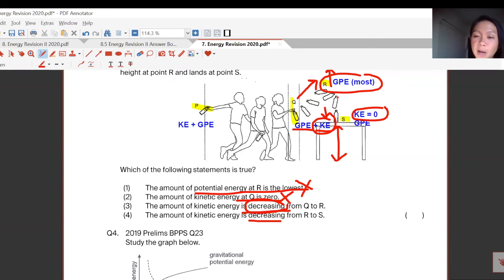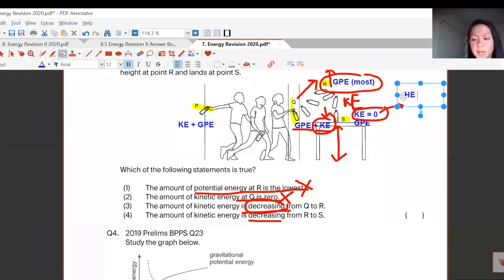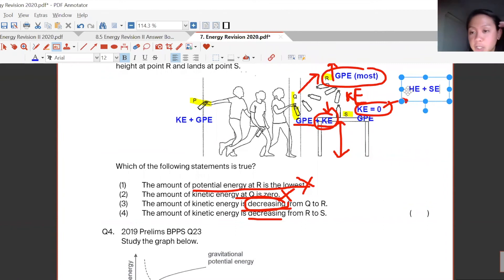Then after that, it will speed up, speed up, speed up because GPE is converted to KE over here. My GPE drops. But once it hits the table, then my KE becomes zero. Why? Because my KE is converted to heat energy plus sound energy to overcome friction. That's why you got loud sound, for example. It will just stop there.